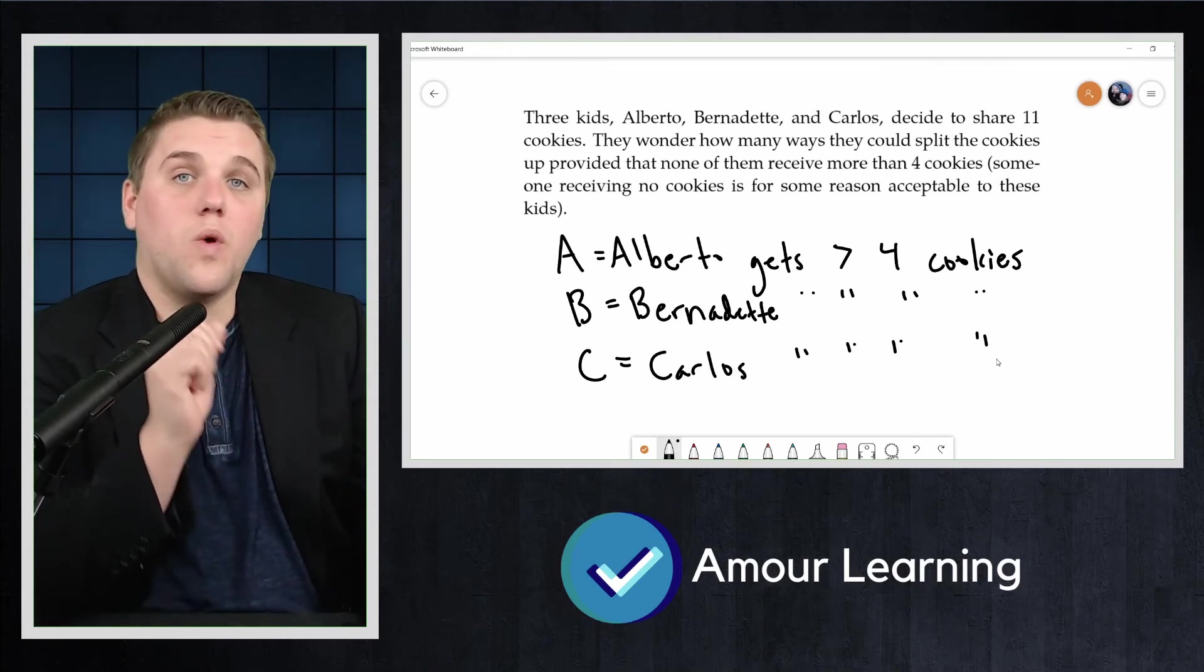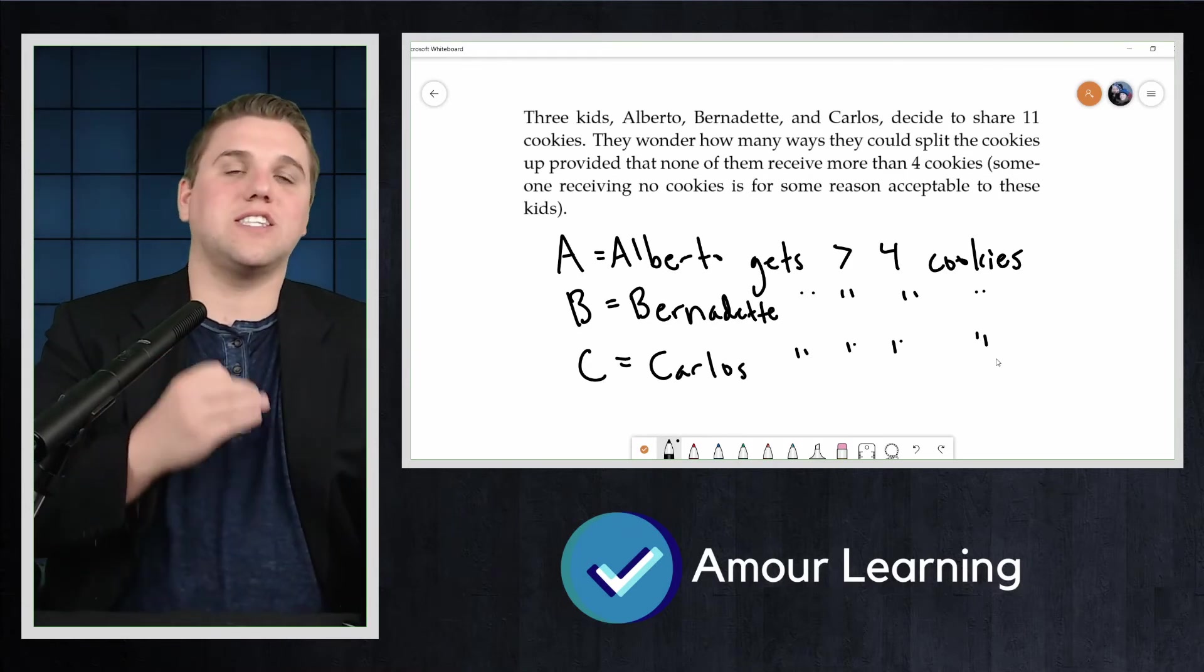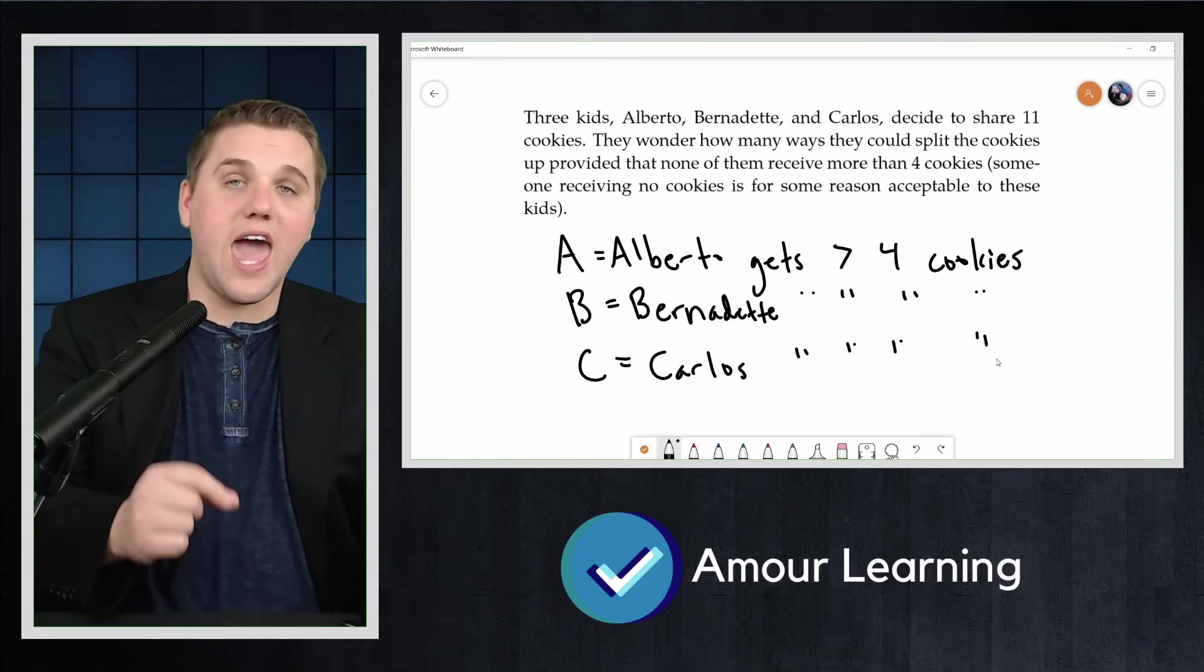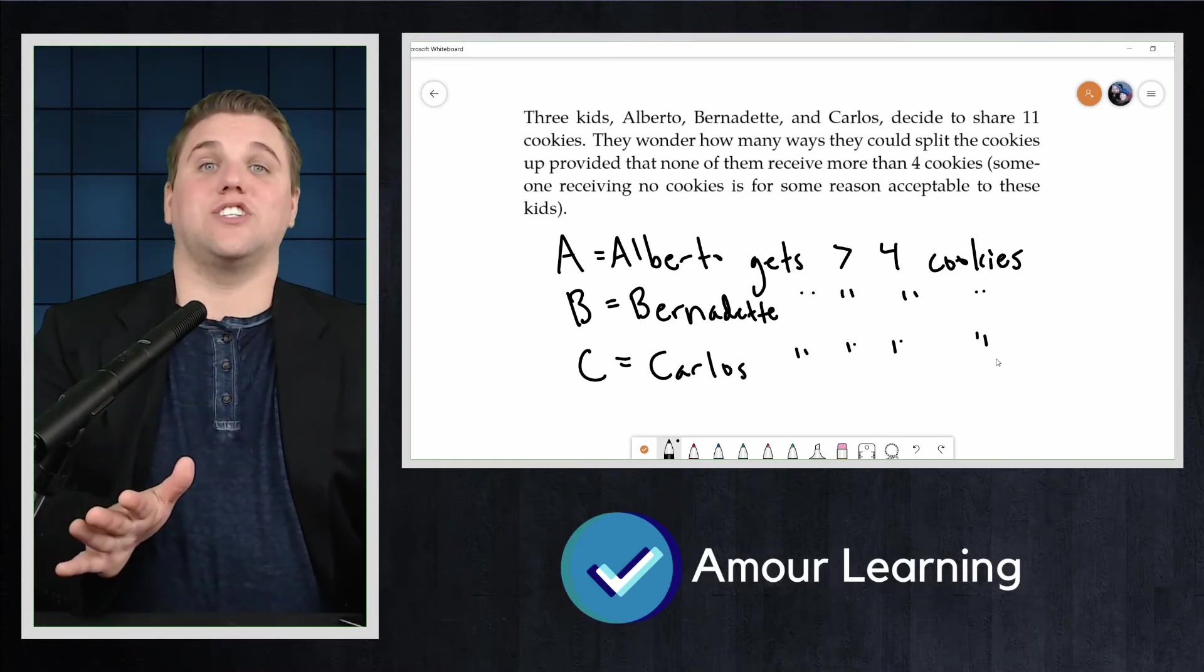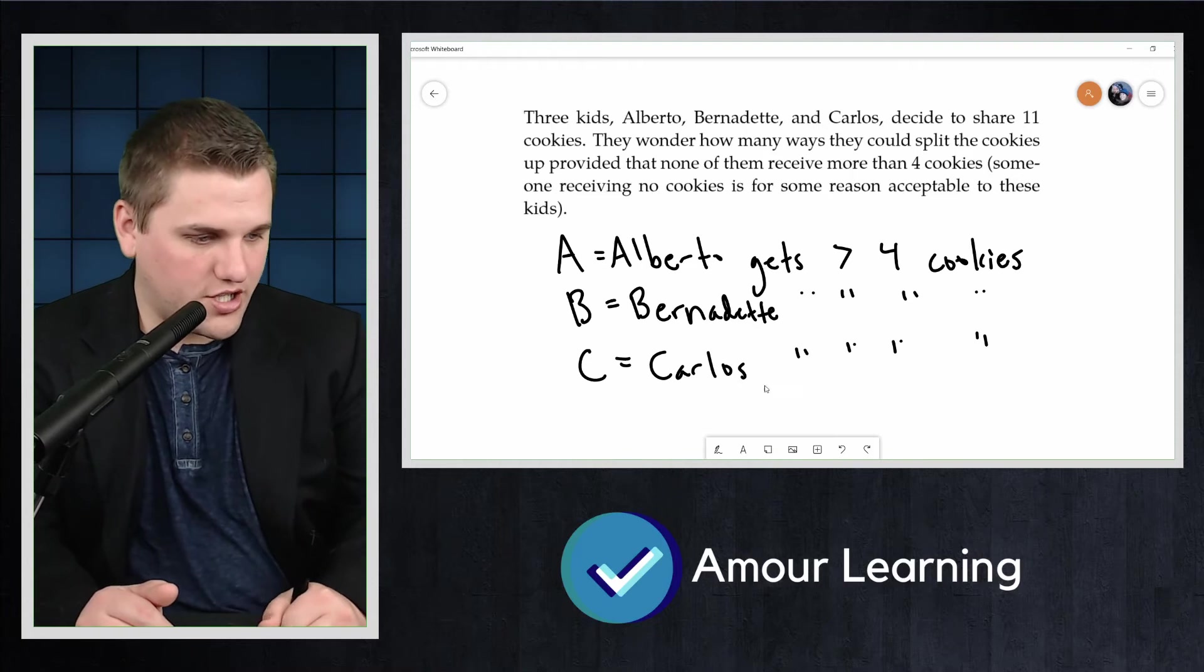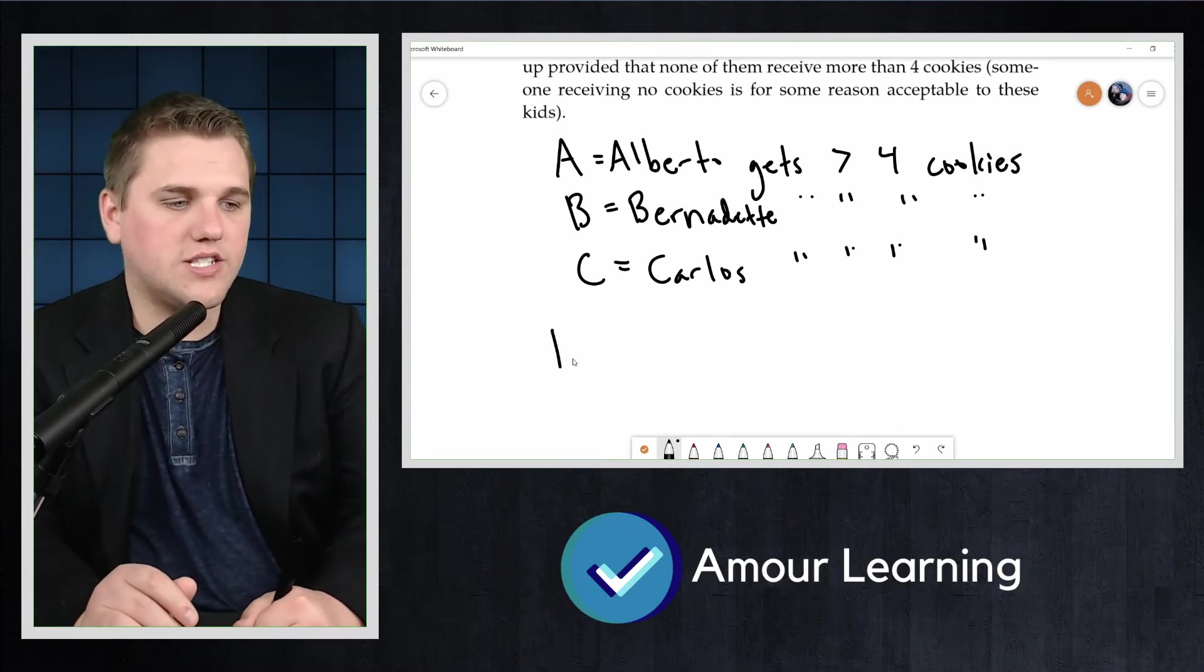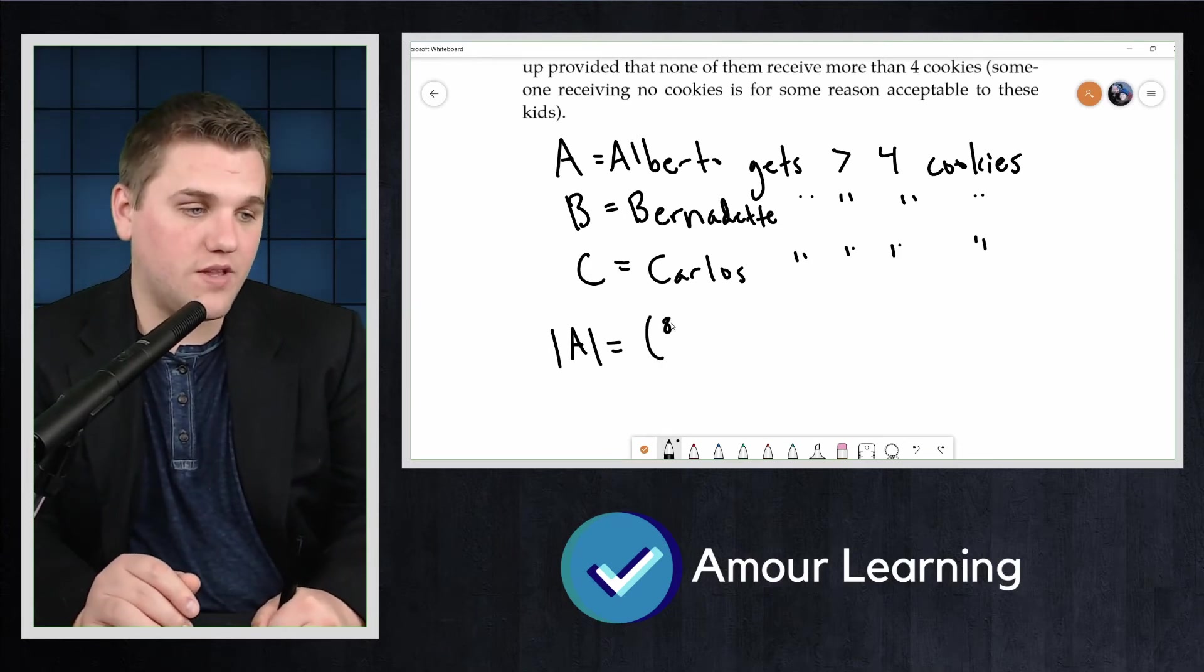So when we are looking for the sake of subtraction for the size of the set A union B union C, using the principle of exclusion, we must find the sizes of A, B, C, A intersection B, A intersection C, and so on. Here's what we find. The size of A, which is the set of all events where Alberto gets more than four cookies, the size of A is just 8 choose 2. And let me explain why.